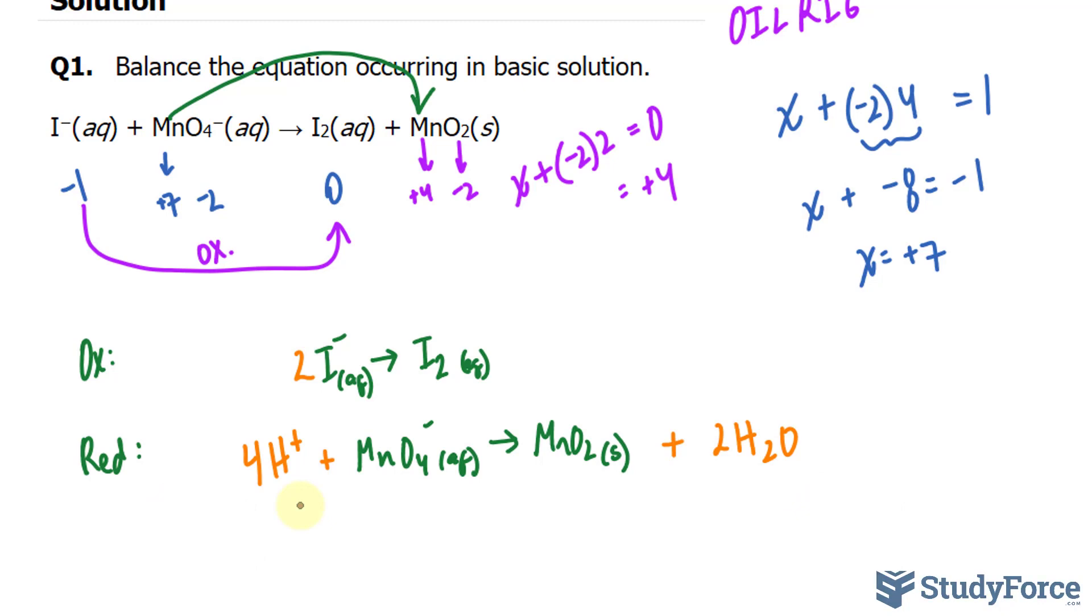So we add the same number of OH minus ions to each side of the equation. Watch this. So I'll write down 4OH minus on the left side and 4OH minus on the right side.